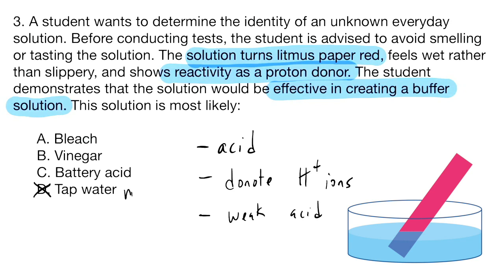So out of our four options here, we're trying to find one that is acidic, it's going to donate protons, and it's a weak acid. So I can already eliminate tap water, because tap water is neutral. I can also already cross out or eliminate bleach, because bleach is a strong base. So between vinegar and battery acid, our best option here is going to be B vinegar. Battery acid is a strong acid, and would not make a good buffer solution. And vinegar checks out all of our boxes. It's an acid, it's going to donate those protons, and it's a weak acid.